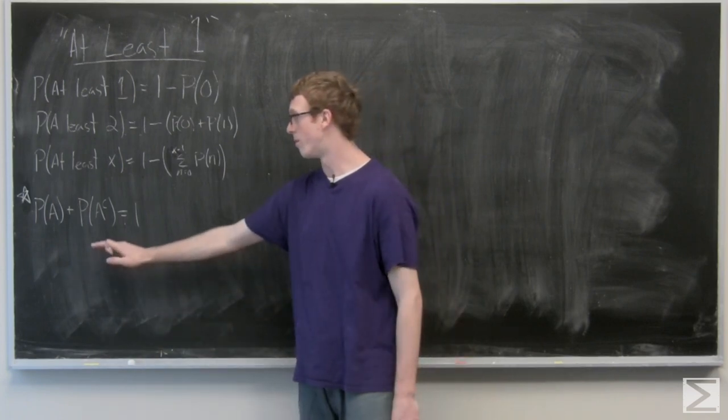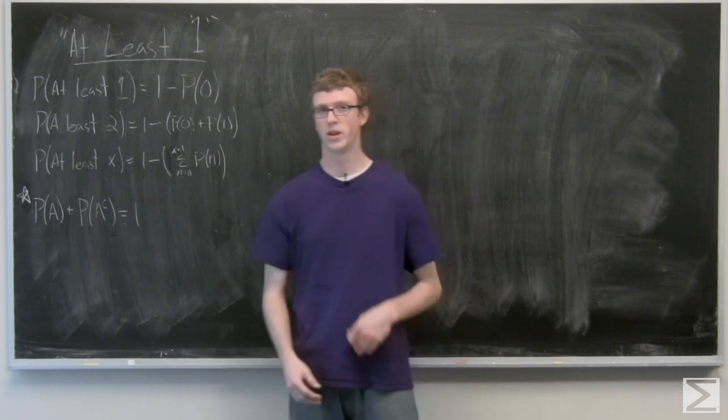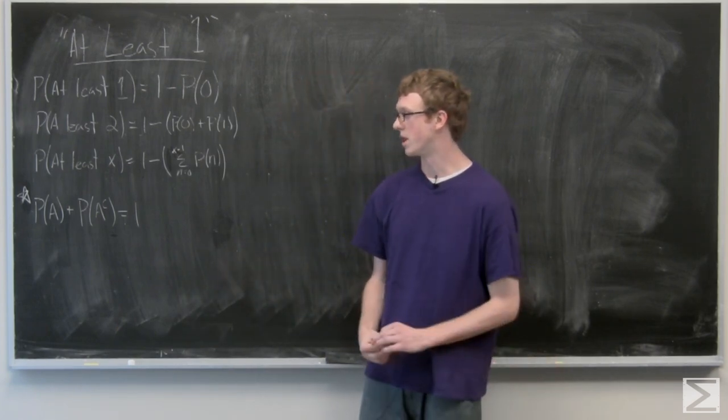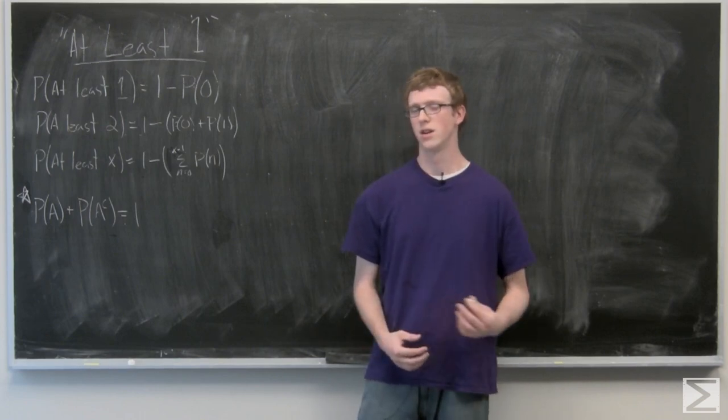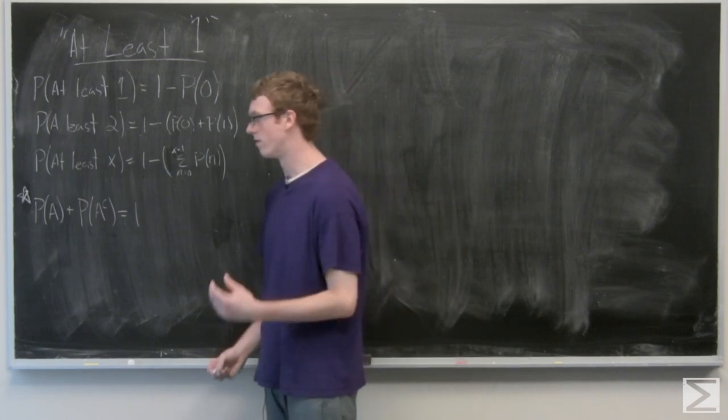So the golden rule to remember here is that the probability of A plus the probability of not A or the complement event is going to be one. So basically, the probability of A is one minus probability of not A.